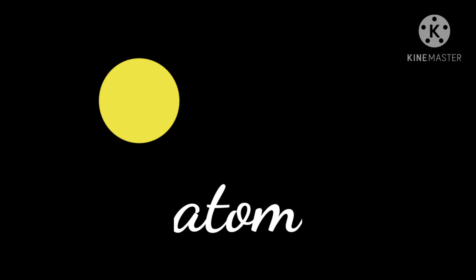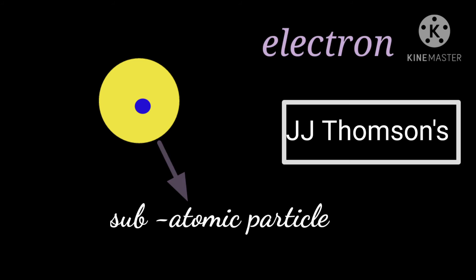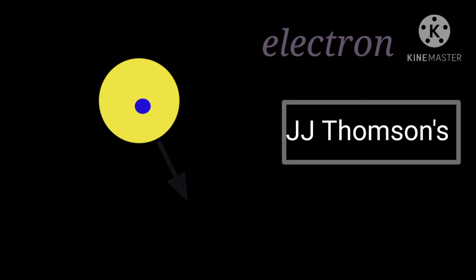By 1900, it was known that the atom was not a simple, indivisible particle, but that the atom contained at least one subatomic particle: the electron, identified by J.J. Thomson.